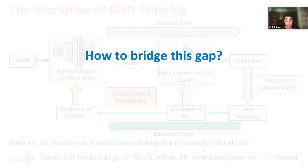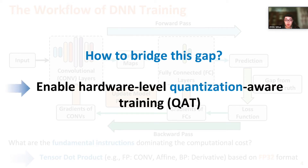Previous research shows that representing model parameters in such high precision is not always necessary. It is possible to represent parameters in lower bit precision while not downgrading model quality. This leads to our basic idea: performing model training in the int8 format to match on-device resource constraints.